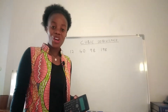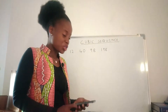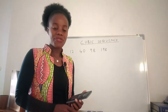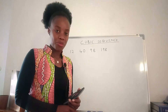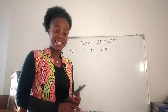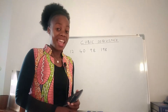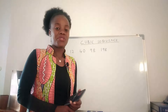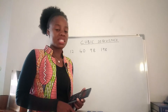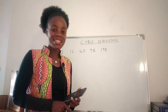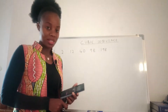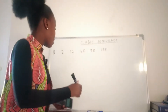For a sequence to be regarded as a cubic sequence, the third difference is supposed to be the same. If the second difference is the same, that's a quadratic sequence, and if the first difference is the same, that's a linear or arithmetic sequence.